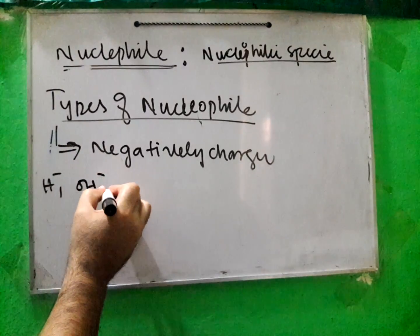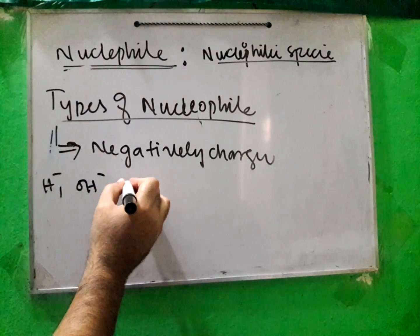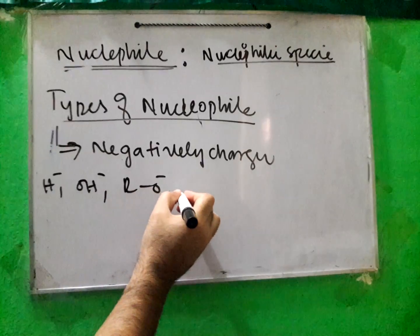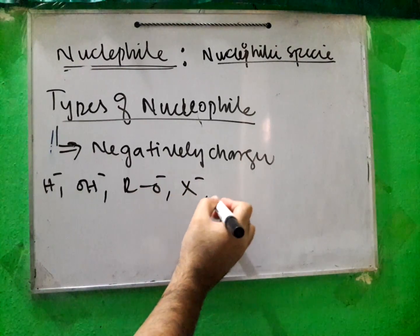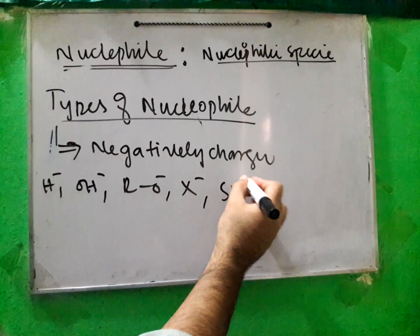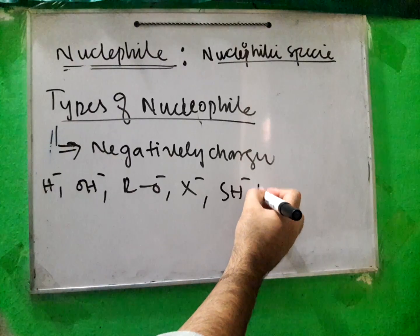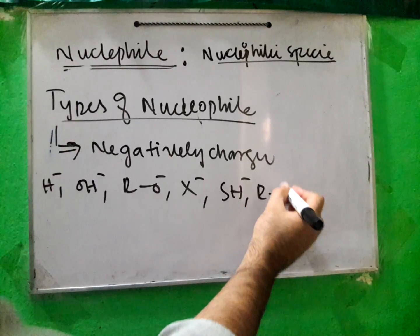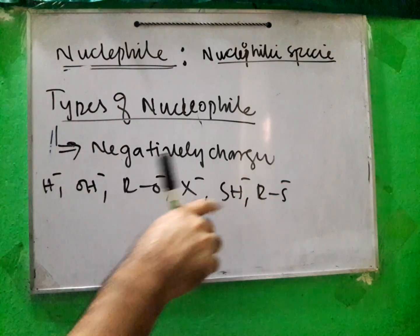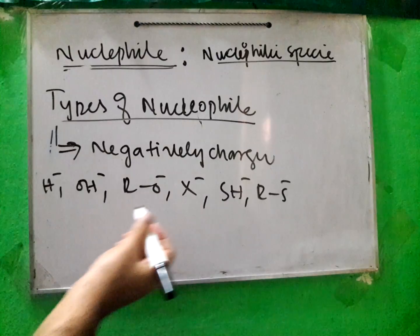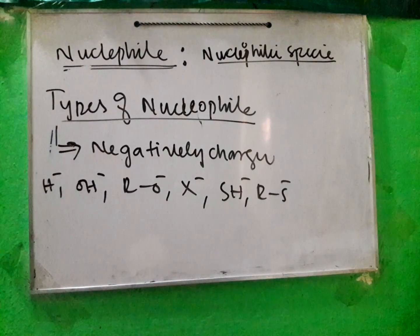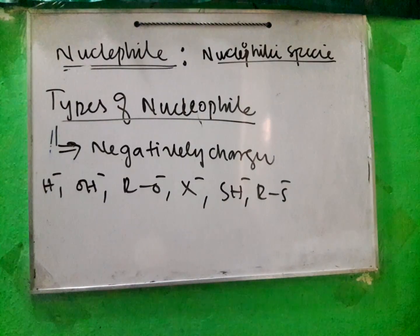The first type of nucleophile is negatively charged. Examples include: hydroxyl OH⁻, RO⁻, X⁻ (halide), SH⁻, and RS⁻. They have a negative charge and a lone pair of electrons, and therefore they can act as nucleophiles.